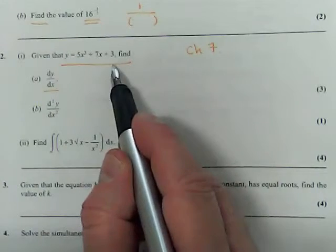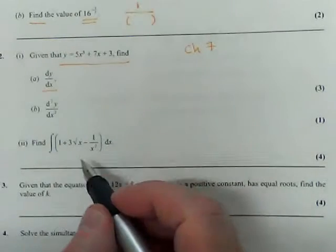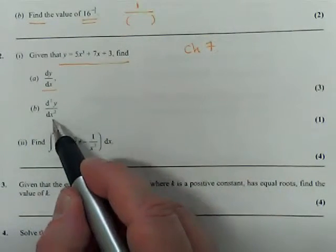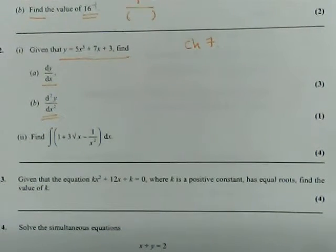So 7x plus 3, you treat like mx plus c, the gradient is just m. Okay, so look up your rule for differentiation in chapter seven, if you've forgotten it, and then differentiate that answer again to get your second derivative in part b. So that first one mark should be quite straightforward.